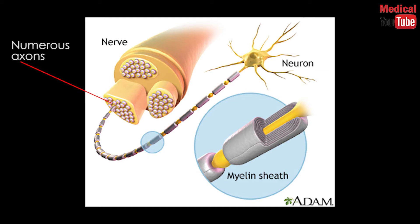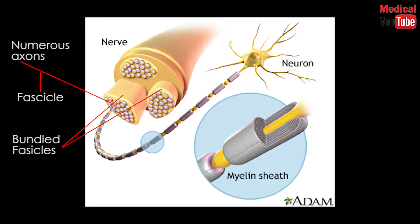Numerous axons, also known as nerve fibers, are often bundled into fascicles. In the peripheral nervous system, bundles of fascicles make up what we refer to as nerves.